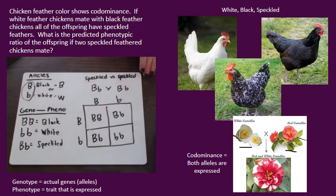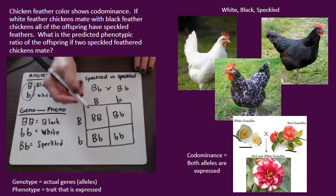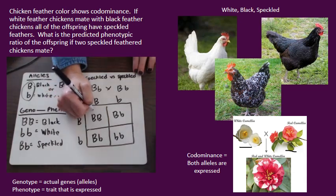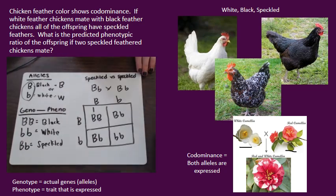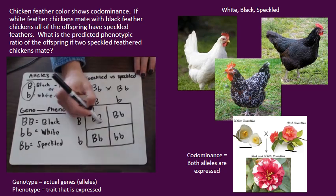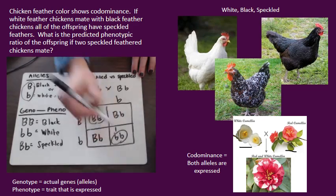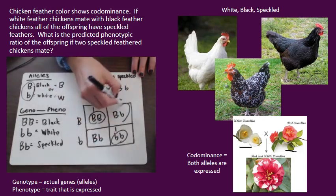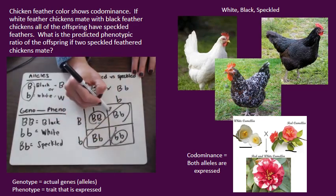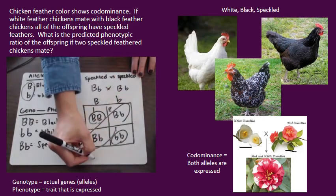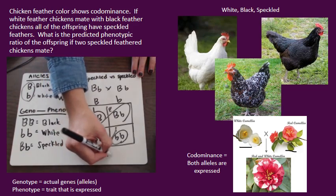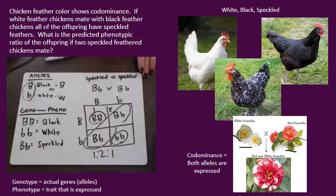For our phenotypic ratio, we are going to have one black chicken, two speckled chickens, and one white chicken — a 1:2:1 ratio. I hope this helps.